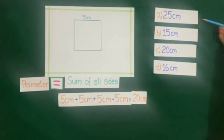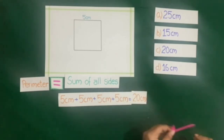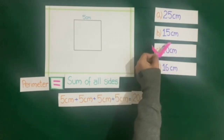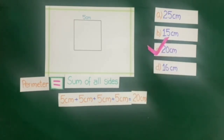So out of these answers, which answer is correct? C. We will put a tick against C, that is 20 cm.